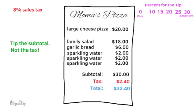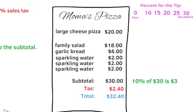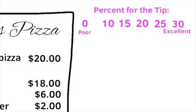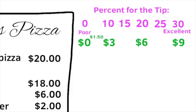Start calculating the tip by taking 10% of the subtotal. 10% of 30 is $3. Going back to the rating scale, we can put $3 for a 10% tip. Double that, and we can put $6 for a 20% tip. Triple that, and we can put $9 for a 30% tip. A 5% tip is halfway between 0 and 10, so the dollar amount would be halfway between 0 and $3. A 5% tip would be $1.50. Add $1.50 to $3, and you'd have $4.50,